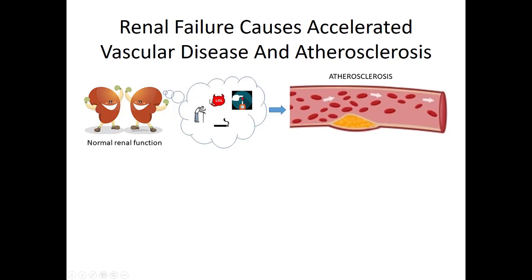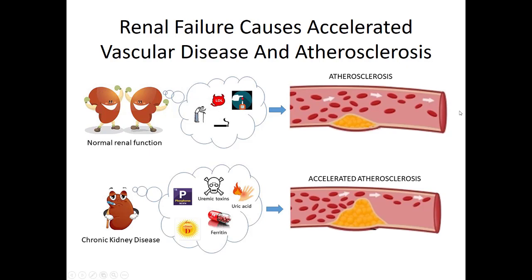A normal functioning kidney processes cholesterol, manages blood flow, and filters the blood. But with chronic kidney disease, you get buildup of phosphorus, changes in calcium, buildup of uremia, inability to process nitrogen, and problems with iron — all leading to increased buildup in the lining of the arteries. That buildup can occur anywhere: in the heart causing a STEMI, in the brain causing a stroke, or in the peripheral vasculature causing an ischemic limb. These patients have very poor vasculature at baseline and are prone to clotting and accelerated atherosclerosis.